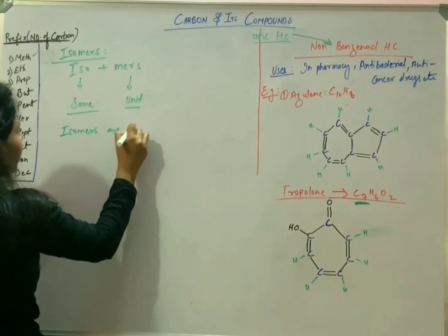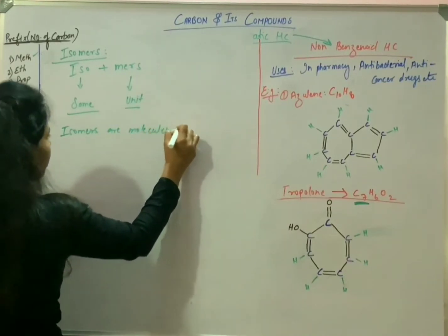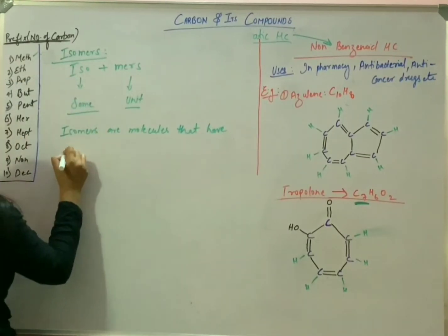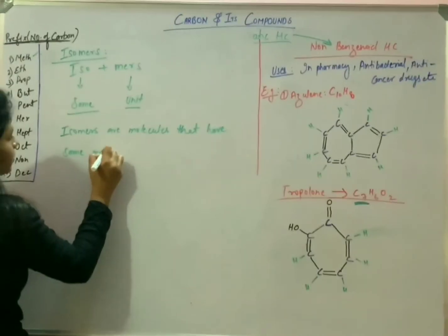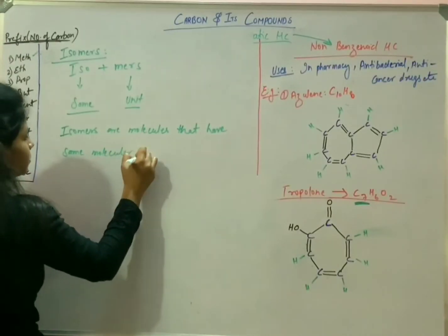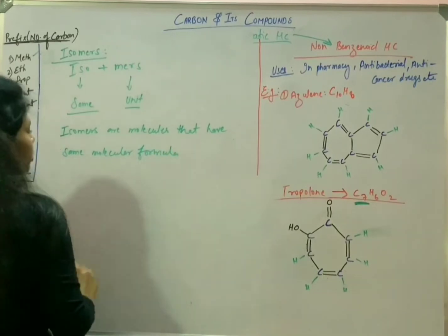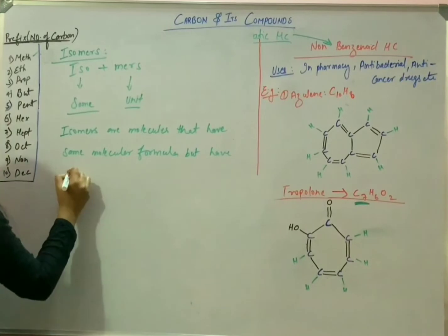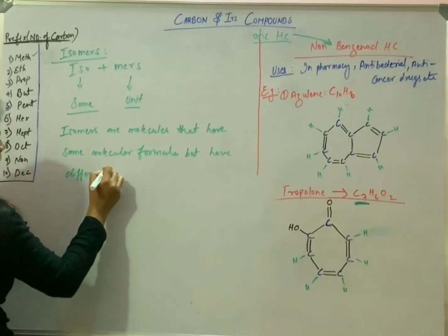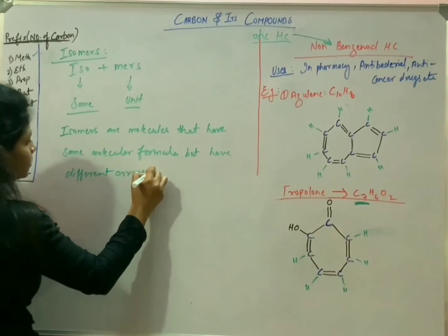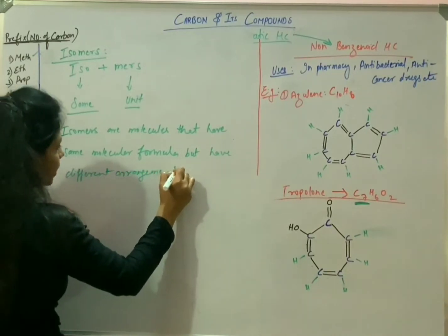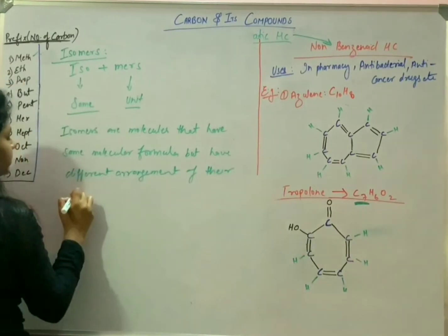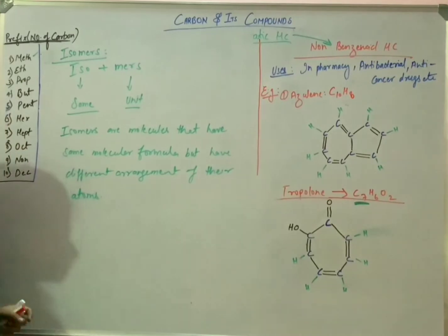In definition form: isomers are molecules that have the same molecular formula but have different arrangements of atoms.